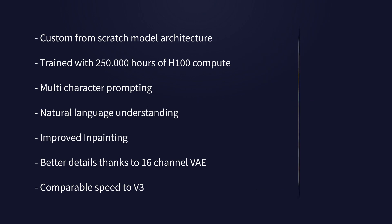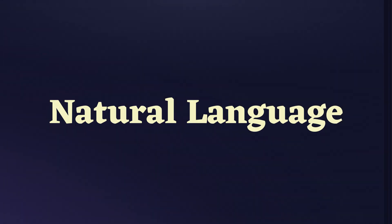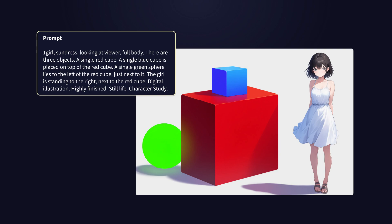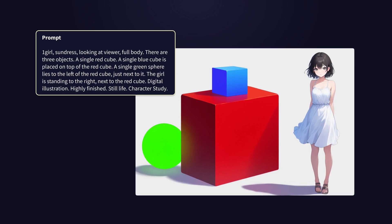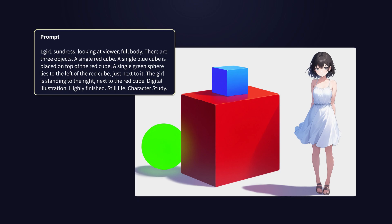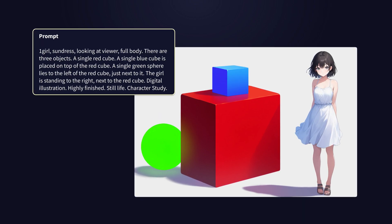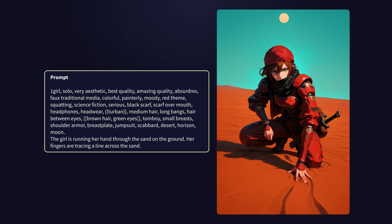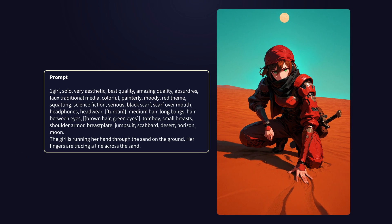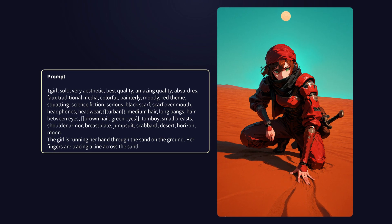Now let's go over the new features that make V4 a big improvement over V3. Natural language prompting is a new feature we're particularly excited about. We made it a priority to support natural language as a first-class feature, allowing users to describe entire scenes in plain English. The results exceeded our expectations — you can now compose complex scenes using natural language alone. And for our experienced users, this opens up new possibilities by allowing them to combine natural language with tags to achieve effects that weren't possible before.